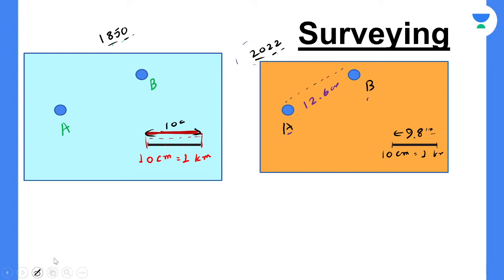Originally, 1 cm on the map was 1 km on the ground. Now the reference line changed - the map shrunk. On the ground, the distance between two points is still the same, but on the map the reference line was 10 cm and now it's 9.8 cm.